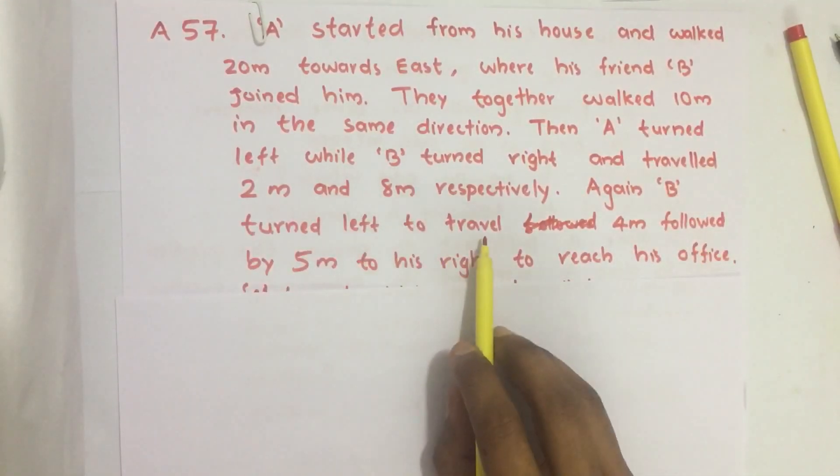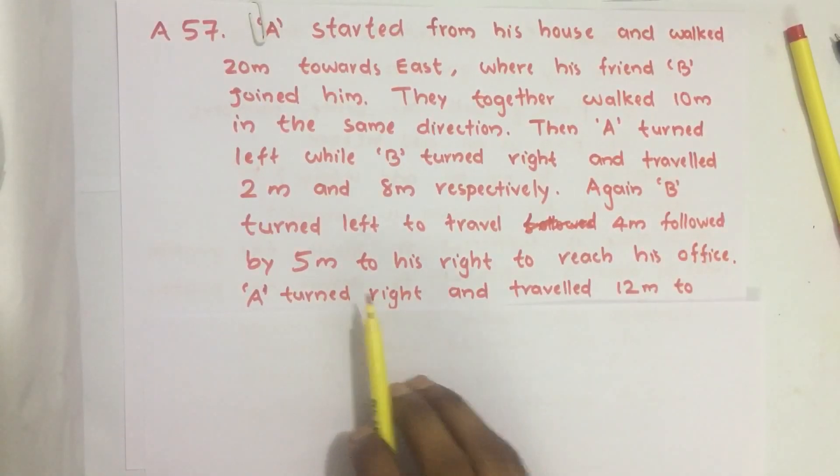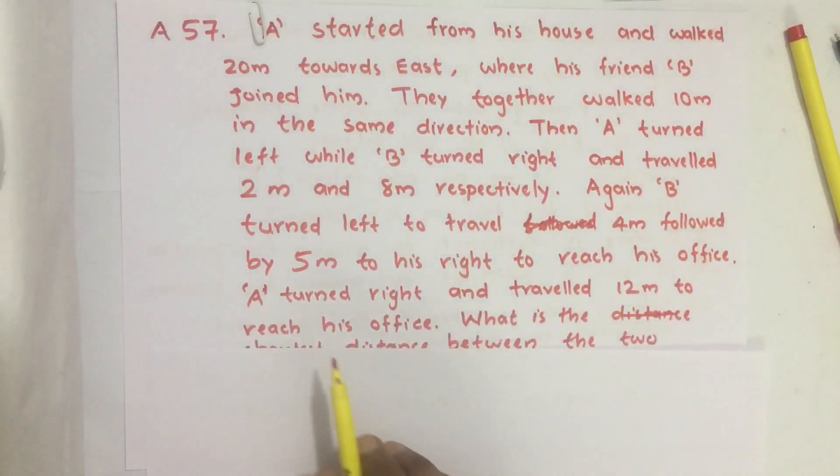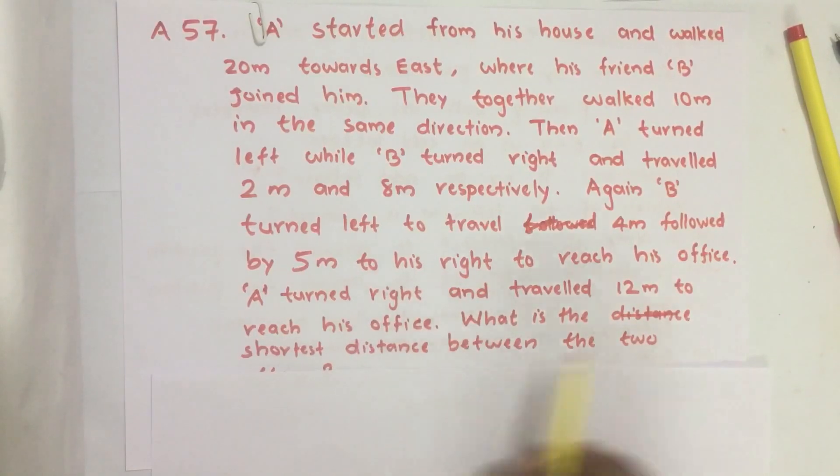Again B turned left to travel 4 meters followed by 5 meters to his right to reach his office. A turned right and traveled 12 meters to reach his office. What is the shortest distance between the two offices?